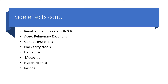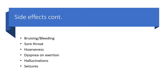Other side effects include renal failure leading to increased blood urea nitrogen or creatinine, acute pulmonary reactions, genetic mutations, blood clots, hematuria, onychocytosis, hyperuricemia, rashes, bruising or bleeding, dysphonia or voice changes, dyspnea on exertion, hallucinations, and seizures.